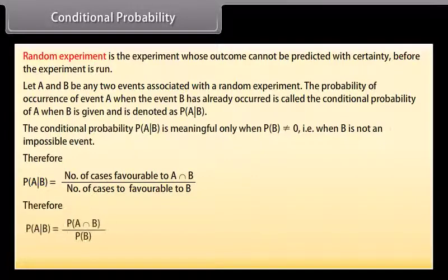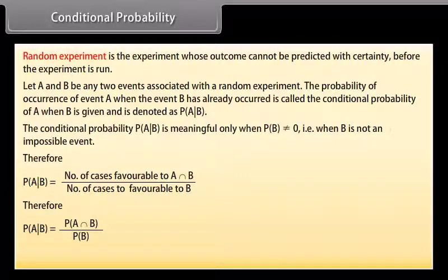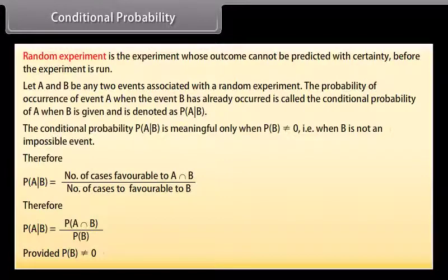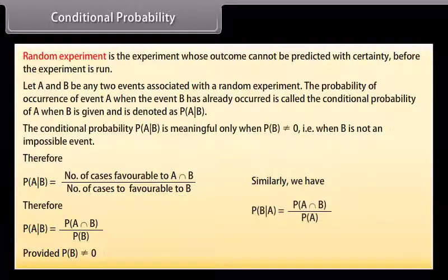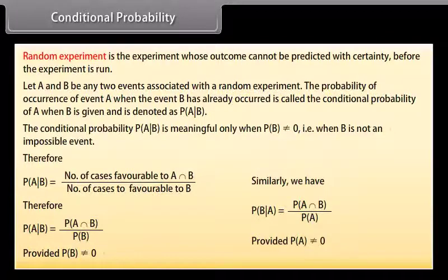Therefore, the conditional probability of event A given event B is equal to P(A∩B) divided by P(B), provided P(B) is not equal to zero.